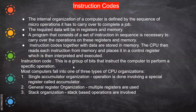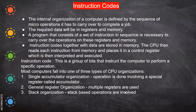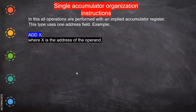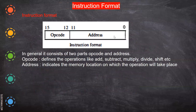Now we'll see the instruction code format. An instruction code is a group of bits that instructs the computer to perform a specific operation. Most computers fall into three types of CPU organization: single accumulator organization, where all operations are carried out based on the accumulator; general register organization, using multiple registers like B, C, D, H, L, and temporary registers; and complete stack organization.